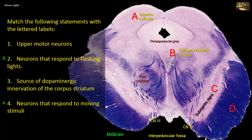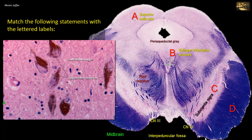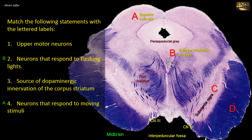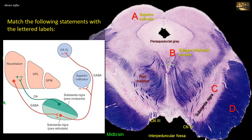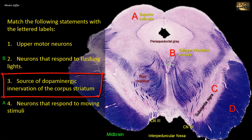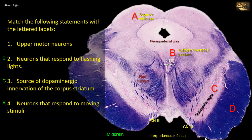C is the substantia nigra, which is a motor nucleus that consists of two regions: pars compacta and pars reticularis. The compact zone is made up of distinctively pigmented dopaminergic neurons, while the reticularis contains non-pigmented neurons. The substantia nigra is reciprocally connected to the corpus striatum and is involved in regulating motor activity. Its neurons undergo degeneration in Parkinson's disease. Thus C, the substantia nigra, matches with 3: source of dopaminergic innervation of the corpus striatum.